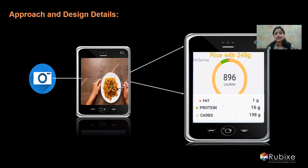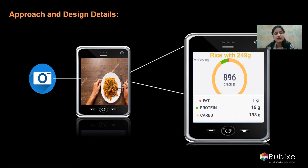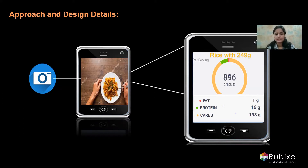This is how our app will look to an end user. A user, when logged into our app, will simply click a picture of the food item. In turn, our app will give details about the calories, fats, proteins, and carbohydrates present in the food. As simple as that — let's quickly look at the approach and design details.